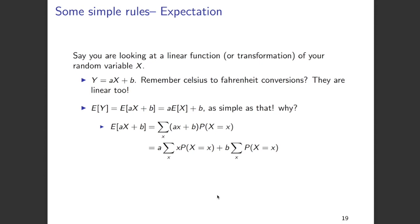We can break this summation into two parts. The first is a times the sum of x times P(X = x) over all values of x, and the second is b times the sum of P(X = x) over all values of x. The first term is nothing but expectation of x, and the second term is just b, because the sum of all probabilities equals 1. So expectation of y turns out to be a times expectation of x plus b.